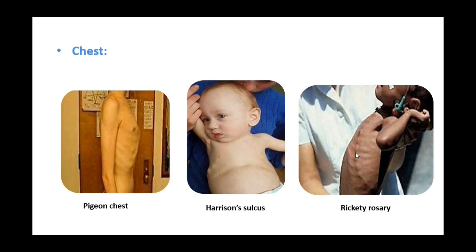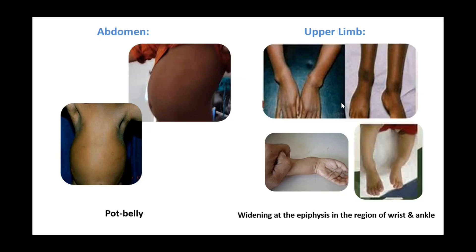Potbelly is a very pronounced abdominal feature, where the child's abdomen becomes protuberant due to marked muscular hypotonia and lumbar lordosis. In the limbs, there is broadening of the long bones, especially in the region of the wrist and at the lower end of the tibia and fibula, with widening of the epiphysis at the wrist and ankle.